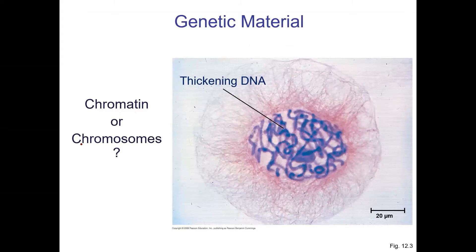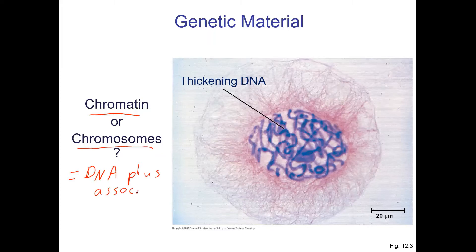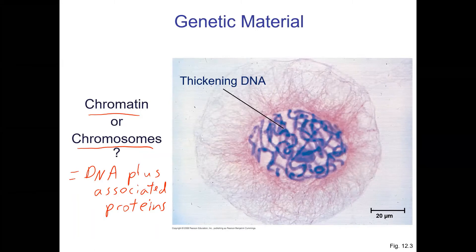Let's talk about this genetic material. We have some DNA there, and often we call the DNA chromatin or chromosomes. Both of these mean the DNA plus associated proteins. Usually when people say chromosome they might be implying that it's thickened or condensed. When they say chromatin they're implying it's not. But often chromosome just means all the DNA — it doesn't necessarily mean that it's thickened or not. I'll go into some particulars on that a little bit later on in the semester.